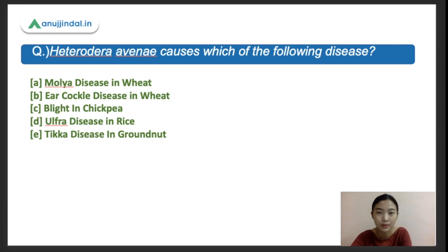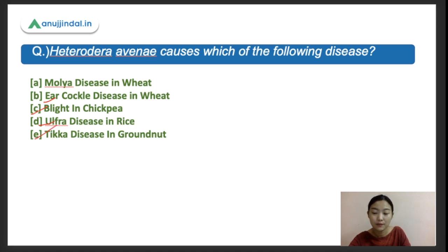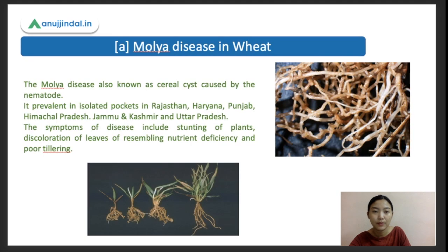The whole plant will start having stunted growth, sometimes yellowing of the leaves, and the whole plant may die off in patches - often going unnoticed by farmers. The options are: A - Moller disease in wheat, B - ear cockle disease in wheat, C - blight in chickpea, D - Ufra disease in rice, E - tikka disease in groundnuts. The right answer is A - Moller disease in wheat, caused by the nematode known as the cereal cyst nematode.